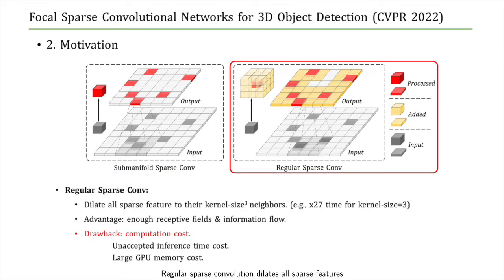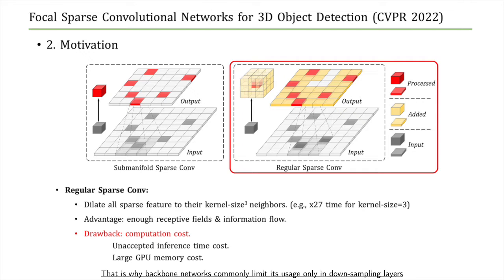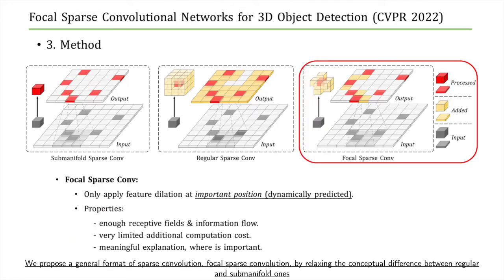Regular sparse convolution dilates all sparse features. Its advantages are enough receptive fields and information flow. However, it inevitably burdens models with considerable computations, which is why backbone networks commonly limit its usage only in down-sampling layers. We propose a general format of sparse convolution — focal sparse convolution — by relaxing the conceptual difference between regular and submanifold ones.